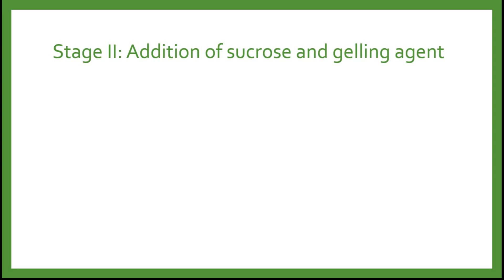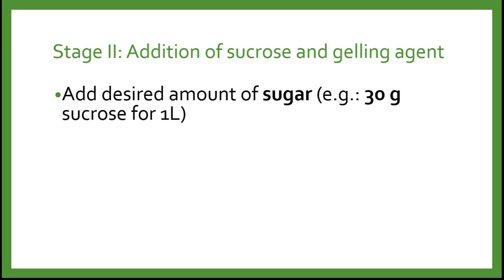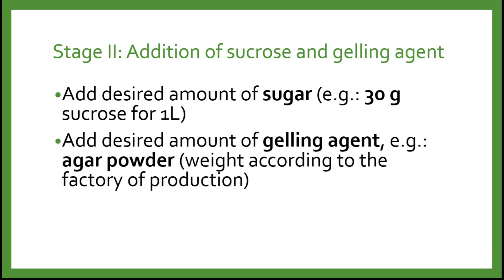The next stage is the addition of sucrose and gelling agent. We add the desired amount of sugar — most likely 30 grams per liter. Sucrose is the commonly used sugar in plant tissue culture. After sterilization, sucrose undergoes hydrolysis, breaking down into glucose and fructose, which the glucose is then used as a building material for the plant. If you use glucose directly, it may degrade at high temperatures during sterilization. Most studies found that sucrose is the best sugar. For home use, you can use table sugar from the grocery store — the difference is just purity compared to lab-grade sucrose.